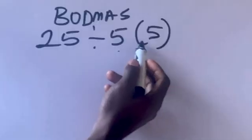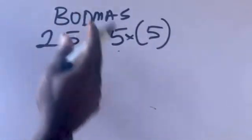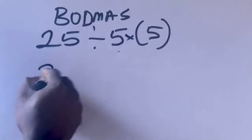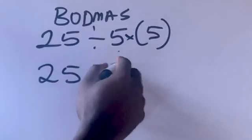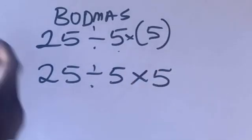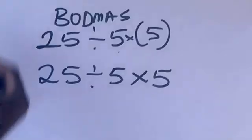So 5 times 5. Remember, this is simple multiplication. So we are going to rewrite this equation like this: 25 divided by 5 times 5. Remember, in the order of operation, division comes before multiplication.